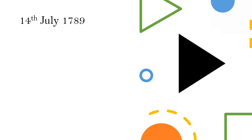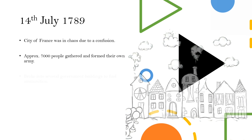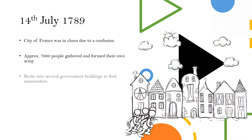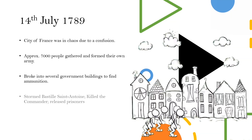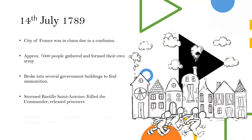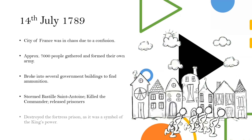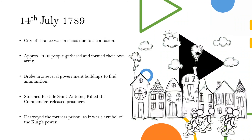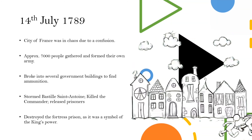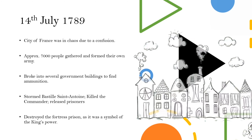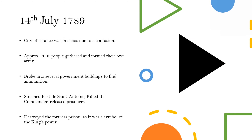In the last lecture, we discussed how due to a confusion among the people, on the morning of July 14, 1789, citizens rallied against their king Louis XVI and, in search of ammunition, destroyed the prison fort Bastille, killed its commander and released its prisoners.